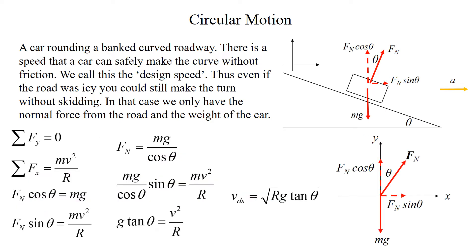In the free body diagram for the car on the banked roadway, we have acceleration in the x-direction. Breaking the normal force into components: in the y-direction we have normal force times cosine theta, and in the horizontal direction we have normal force times sine theta. The angle theta is between the y-axis and the normal force, which equals the bank angle of the roadway. We can now apply Newton's second law to find the design speed.